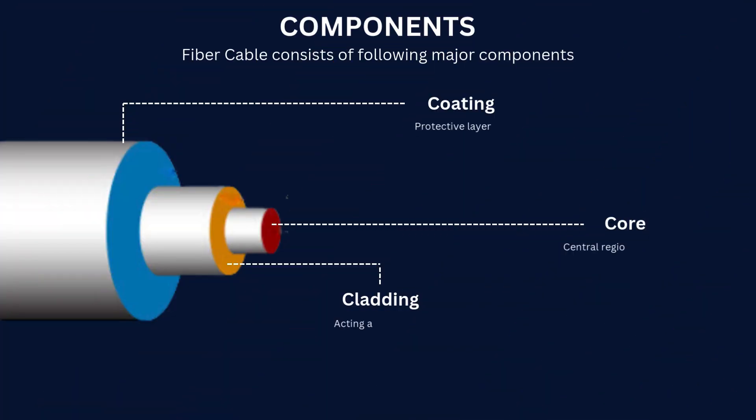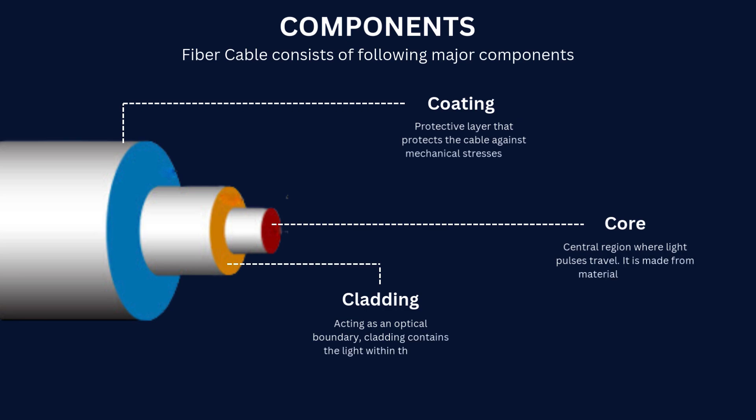Fiber cable consists of the following major components: Core, Cladding, and Coating.